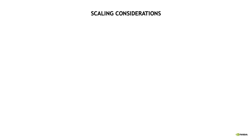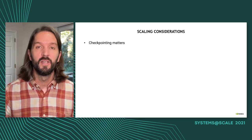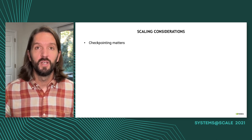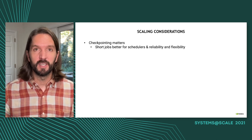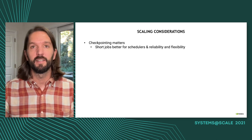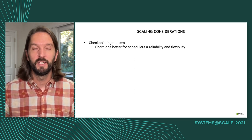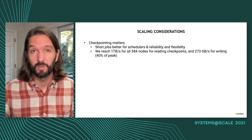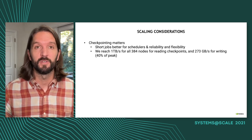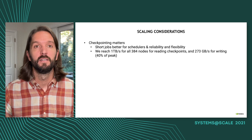To conclude, some lessons learned training this 530 billion parameter model over several months. First, checkpointing really matters on a shared cluster where we want short jobs. Since one model checkpoint is 8.4 terabytes, we had to heavily optimize both reading and saving checkpoints, so that loading and saving didn't consume most of the job's allotment and we could still make meaningful progress per job.